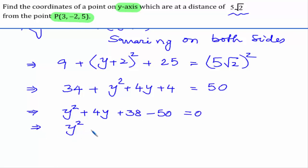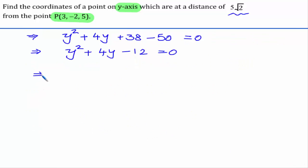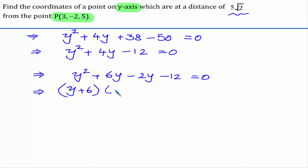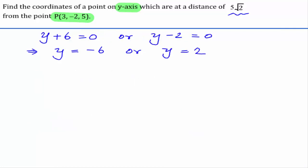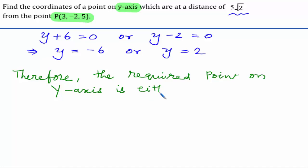Factorizing the quadratic: y² + 6y - 2y - 12 = 0, which gives (y + 6)(y - 2) = 0. So y = -6 or y = 2. Therefore the required point on the y-axis is either (0, -6, 0) or (0, 2, 0).